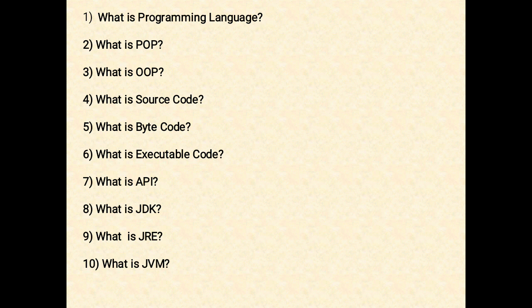The next question: what is OOP? OOP means Object Oriented Programming language, which is based on objects instead of just functions and procedures. These objects are organized into classes which allow individual objects to be grouped together. Example programming languages of OOP are C++, Java, C#, etc.